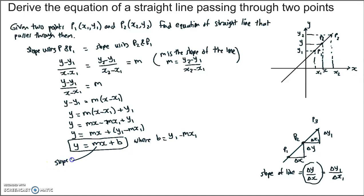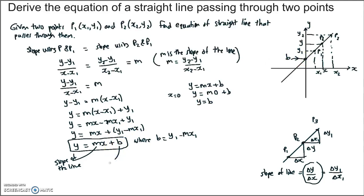So this is the equation of our straight line: y equals mx plus b. Here m is the slope of the line. What is b? When x equals 0, y equals m times 0 plus b, which means y equals b. So when x equals 0 — which is on the y-axis — y equals b. This means b is the place where the line intersects the y-axis. So b is the y-intercept. In the general equation of a straight line, y equals mx plus b: m is the slope and b is the y-intercept.